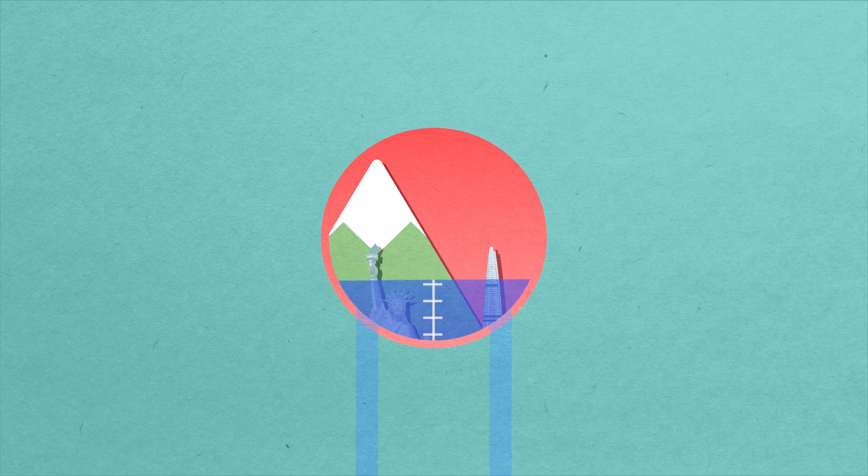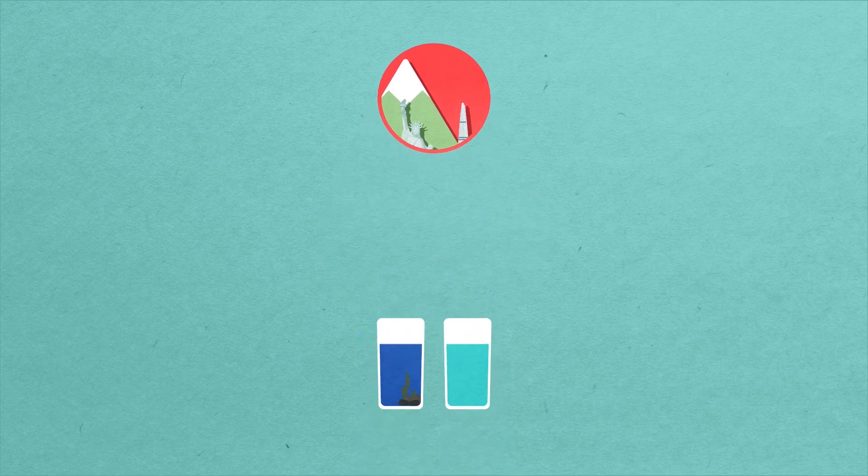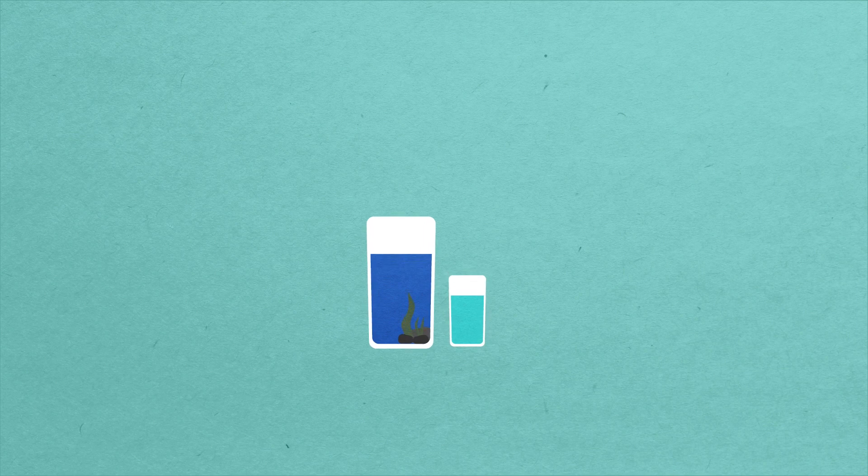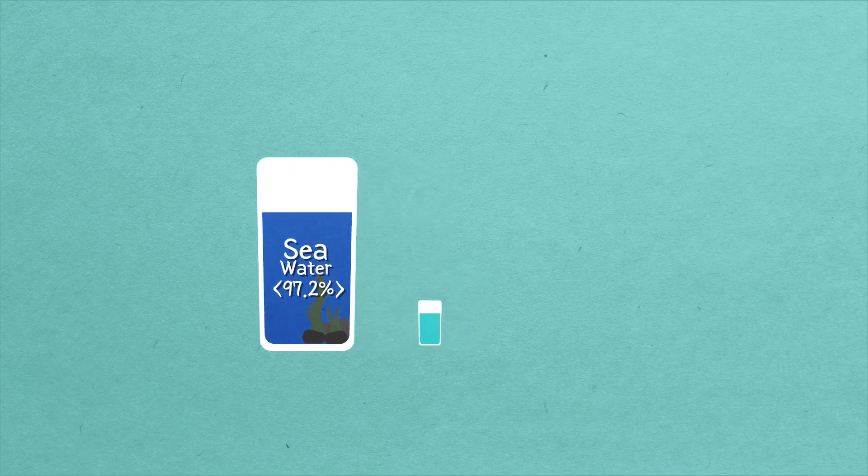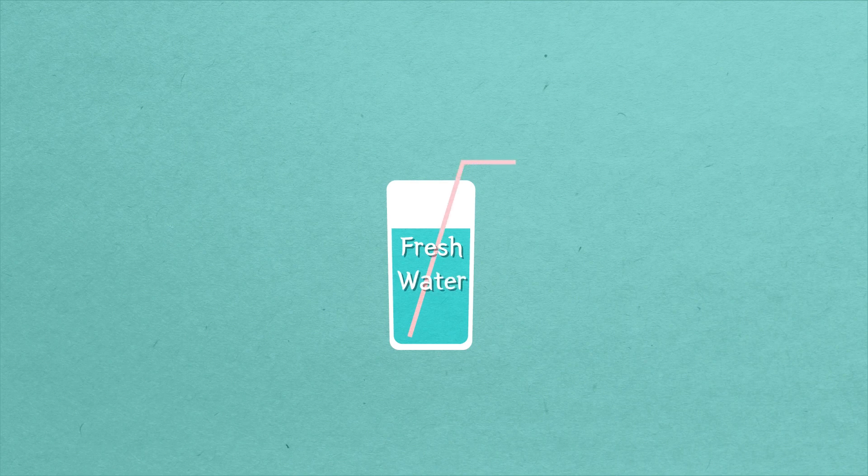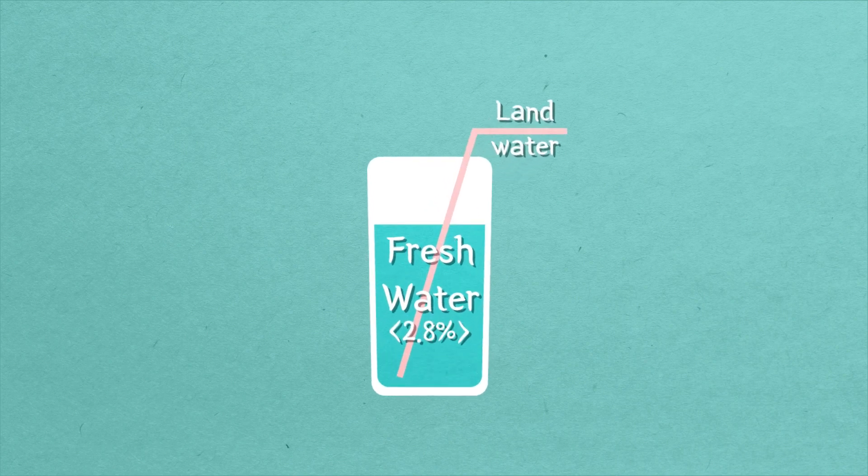Most of this water is salt water, that is, sea water. It is salty water with sodium chloride. The proportion of water that is sea water is as much as 97.2%. On the other hand, fresh water, meaning land water, is only 2.8%.